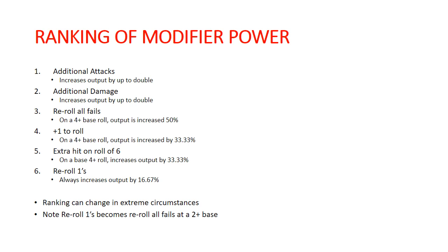Number three is rerolling all fails. On a four-plus roll, this is increasing your output by 50% — you're basically increasing your output by the inverse of your odds to succeed. If you're on a three-plus, your odds to succeed are 66.7%, so rerolling all fails increases your odds by 33%. Plus one to your roll is number four. On a four-up it increases output by 33%, on a three-up by 25% — it's variable depending on your base roll, and even higher when improving a five-up or six-up.